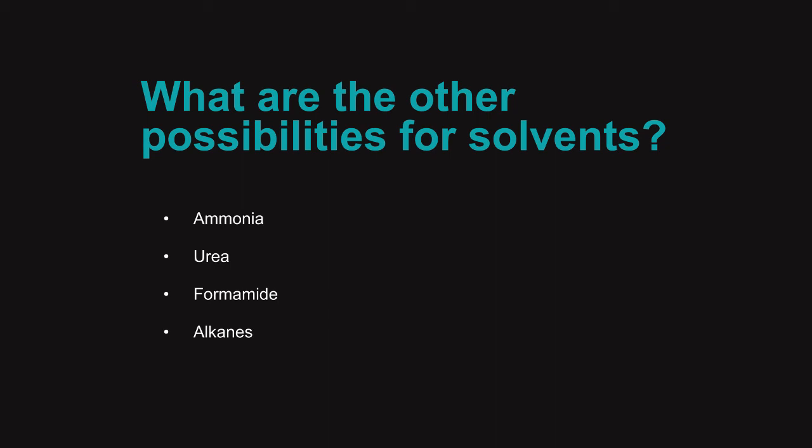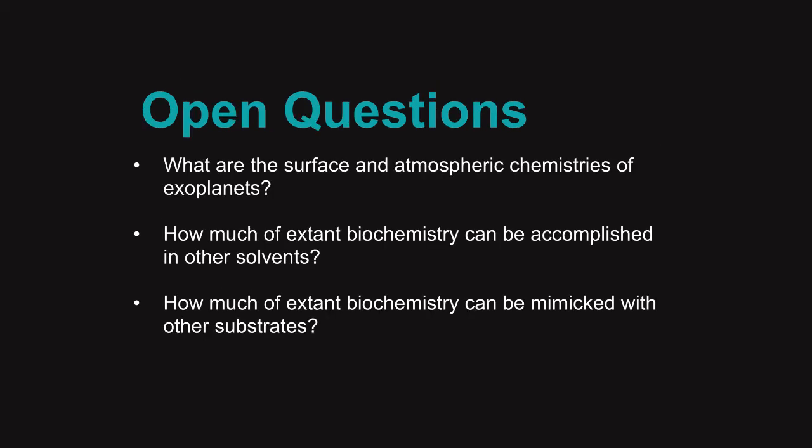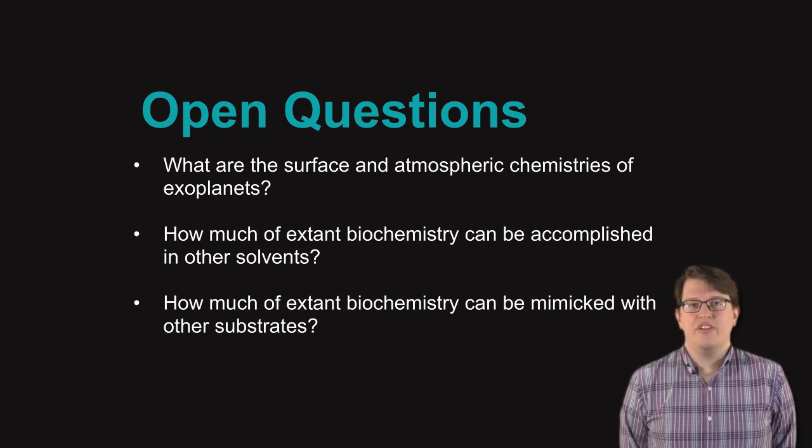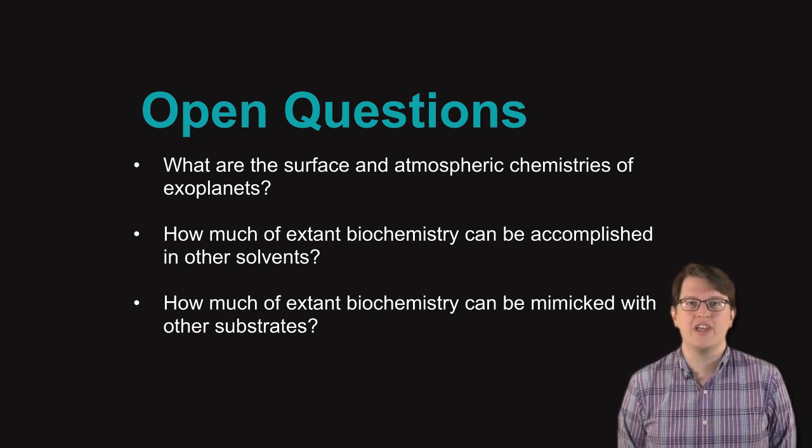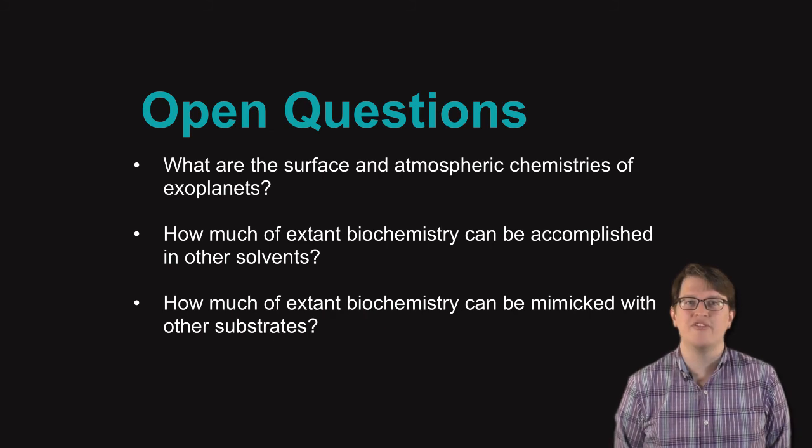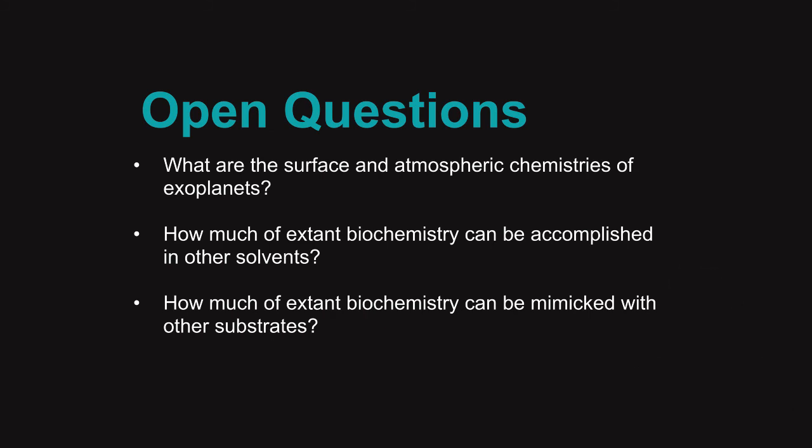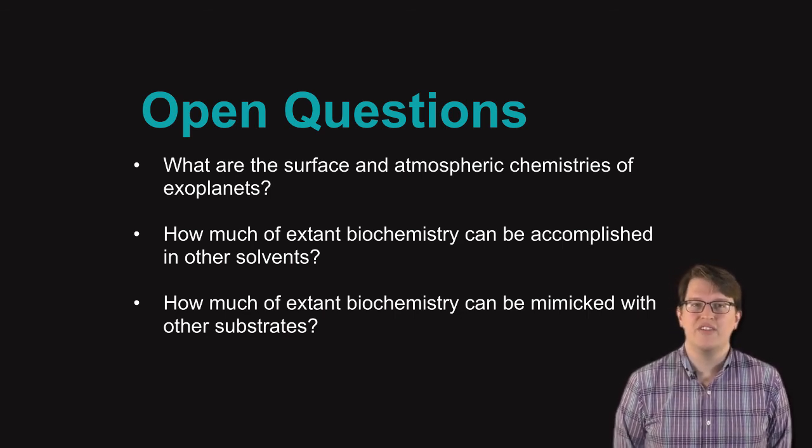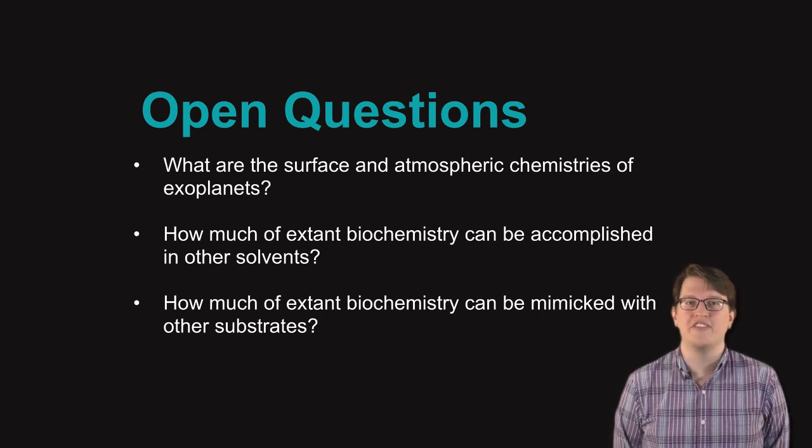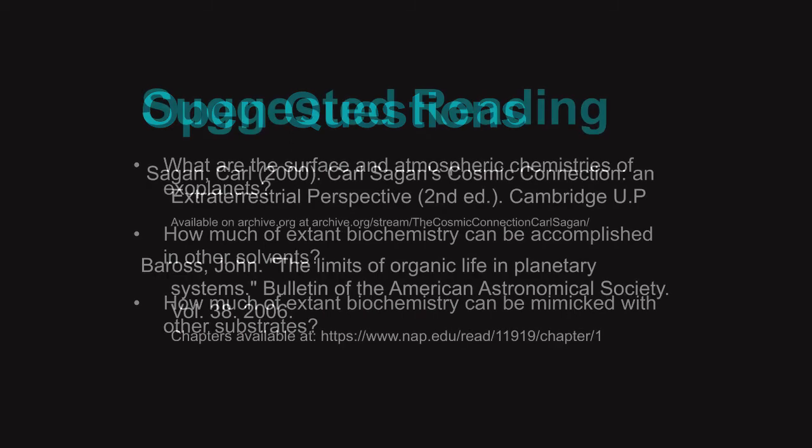With these in mind, some of the open questions in the field are: What are the surface and atmospheric chemistries of exoplanets? What do they look like? This is a topic that has gotten a lot of attention in recent years, as more and more exoplanet observations have been made. People are trying to use telescopes to actually measure the composition of atmospheres in solar systems light years away from Earth. How much of extant biochemistry can be accomplished in other solvents? Can we polymerize proteins, replicate RNA and DNA in solvents other than water? And how much of extant biochemistry can be mimicked with other substrates? Can we make something that looks like RNA out of metal oxides? Lee Cronin certainly wants to know.